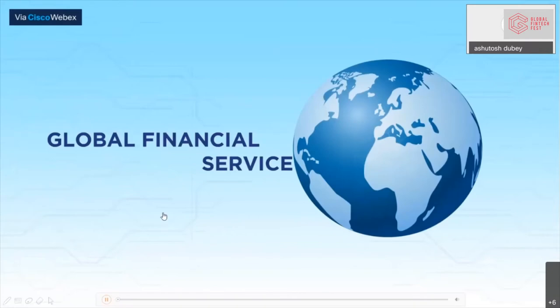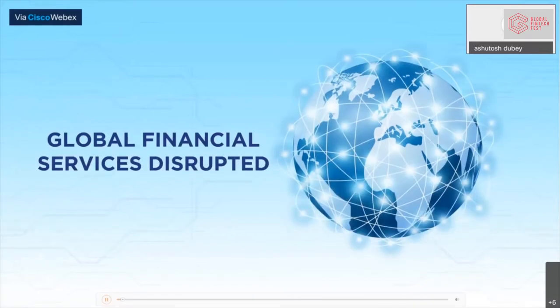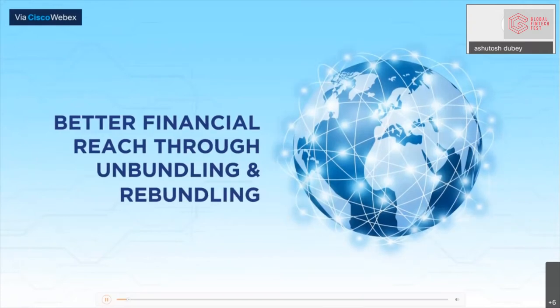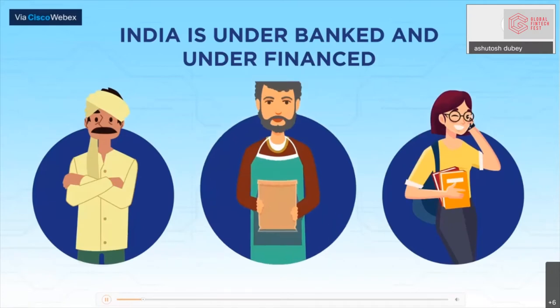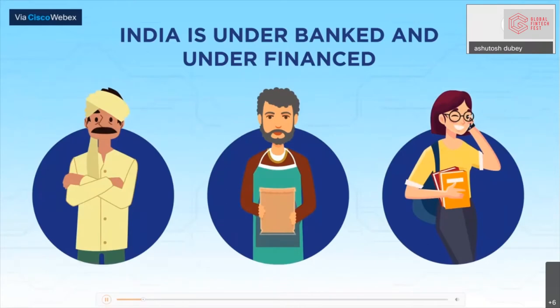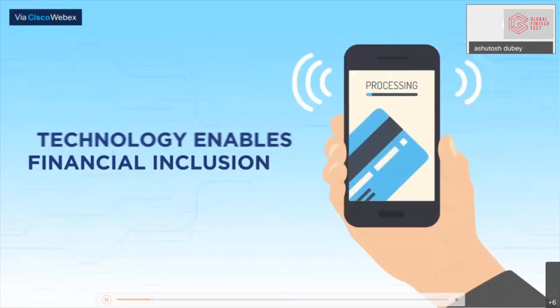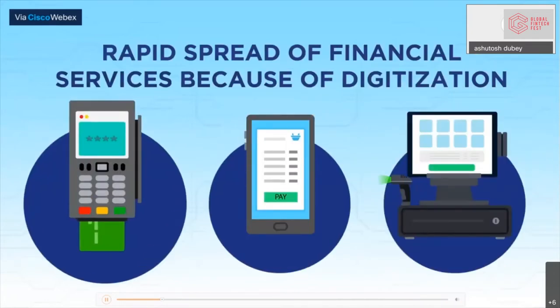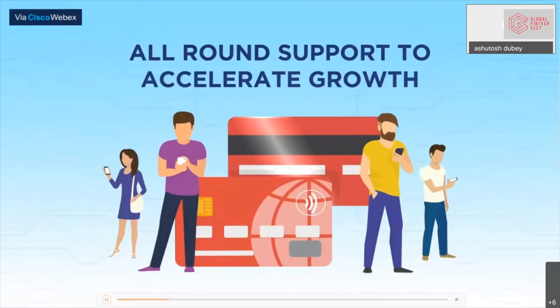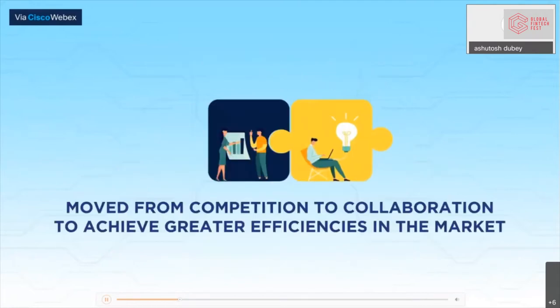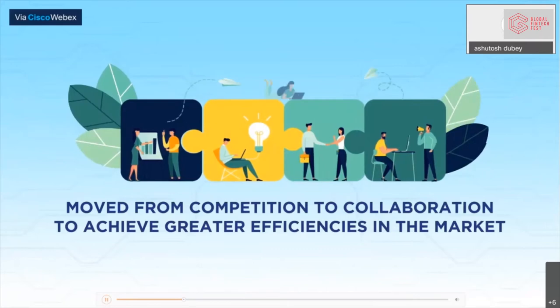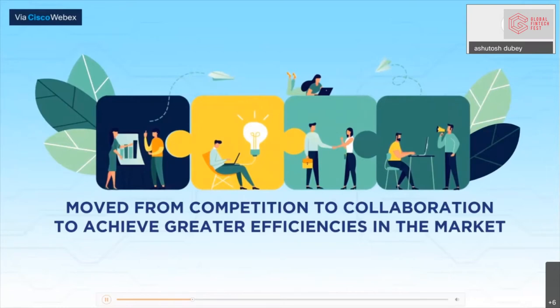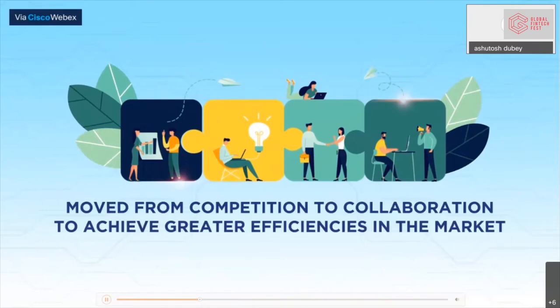Financial services across the globe are beginning to get disrupted at an unprecedented rate. Unbundling and rebundling through disintermediation has enabled better quality and reach of all types of financial services. The Indian landscape, with its huge unbanked and underfinanced population, presents an opportunity for the ecosystem to innovate and develop products to cater to the diverse needs of India. Players across the spectrum have transitioned from a captive to a collaborative approach, and those able to build modular technology stacks and collaborate have been able to effectively scale up.